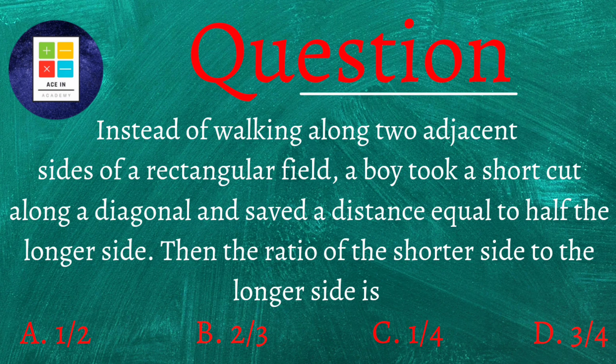Now the question is as follows: instead of walking along two adjacent sides of a rectangular field, a boy took a shortcut along the diagonal and saved the distance equal to half the longer side, then the ratio of the shorter side to the longer side is.